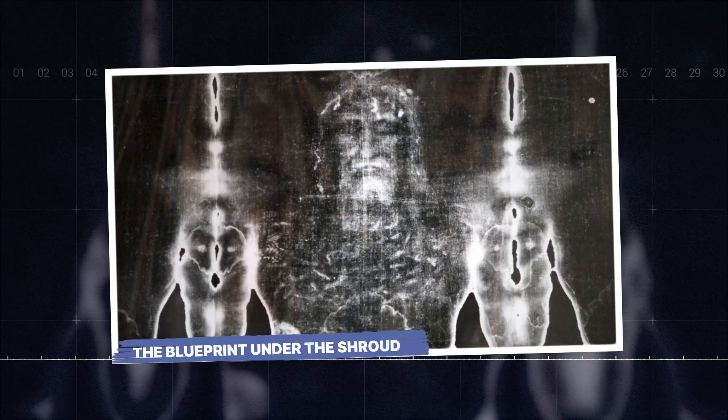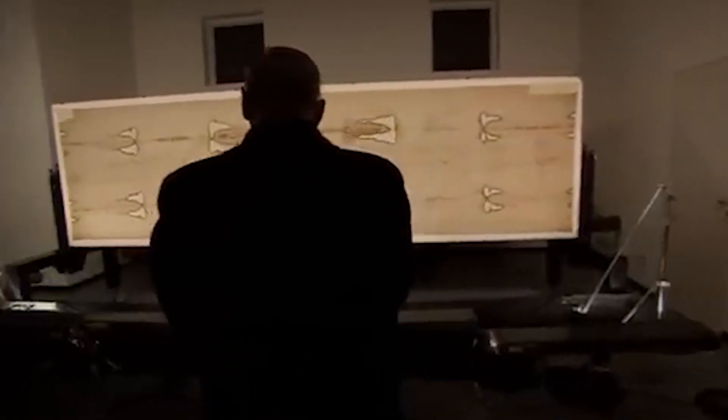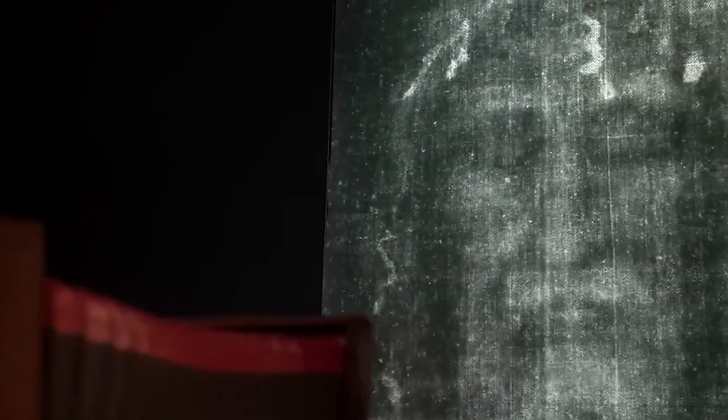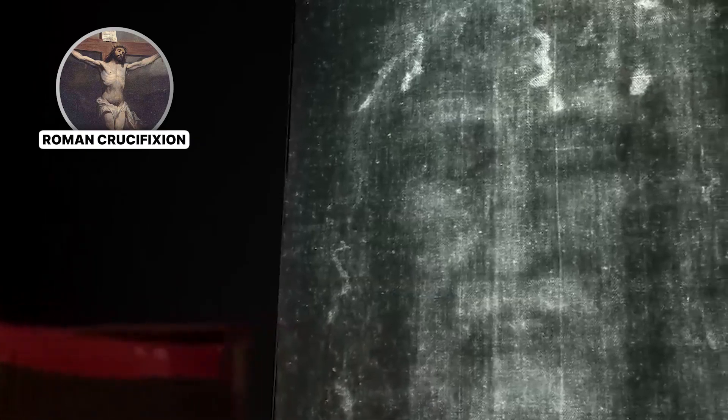For centuries, this 14-foot-long, 3-and-a-half-foot-wide piece of linen cloth has baffled everyone who looks at it. It bears the faint, mysterious image of a man, front and back, who appears to have suffered injuries consistent with a Roman crucifixion.